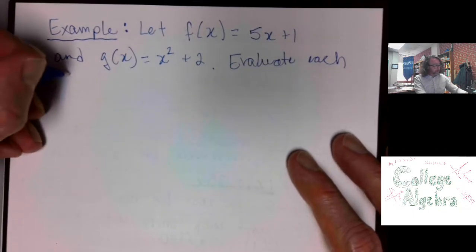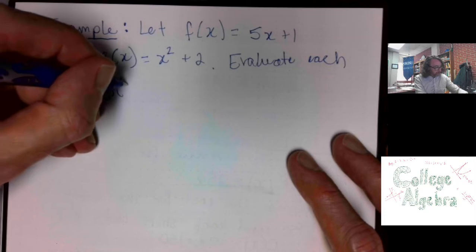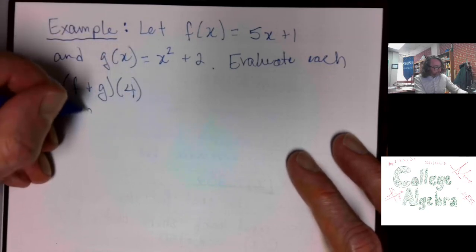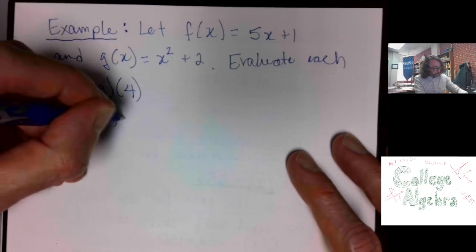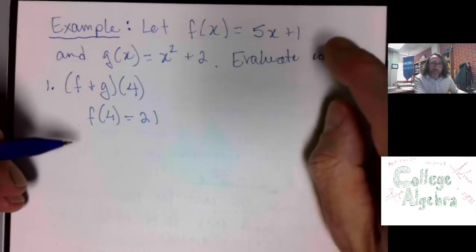Let's do f plus g of 4. So, here's what we do. We find f of 4, figure out what that is. It's 21, right?